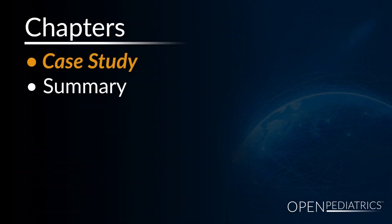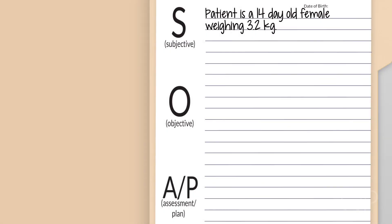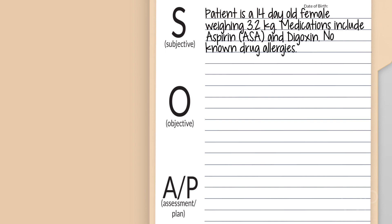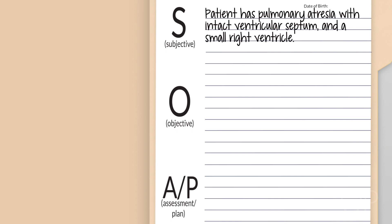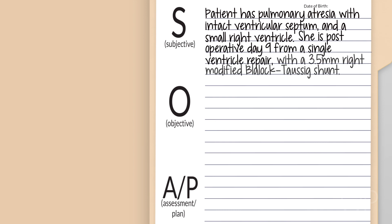Case Study. First, I would like to lay out a case. Patient is Jessica Simmons, a 14-day-old girl who weighs 3.2 kilos. Her medications include aspirin and digoxin, and she has no known drug allergies. She has pulmonary atresia with intact ventricular septum and a very small right ventricle, who is postoperative day 9 from a single ventricle repair with a 3.5-millimeter right-modified Blalock-Tausig shunt.